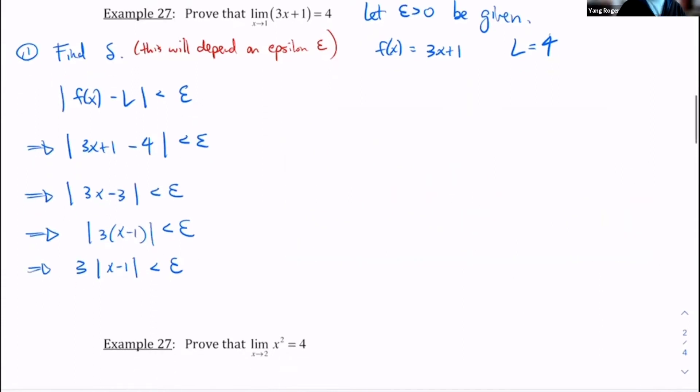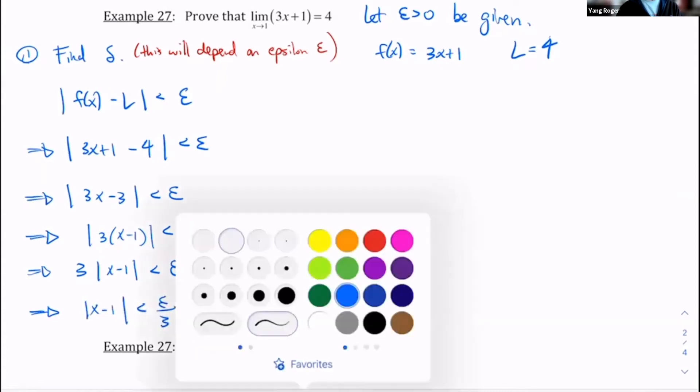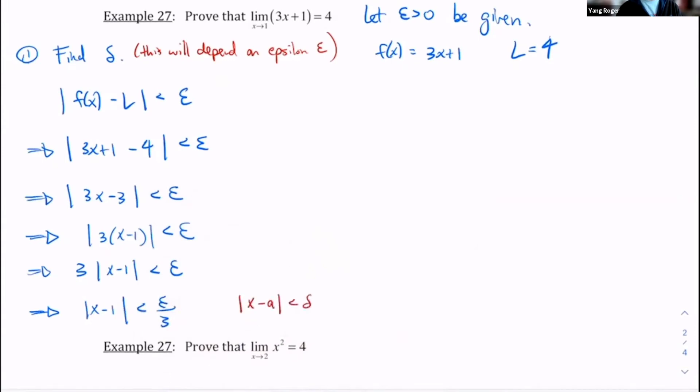So does anyone have any suggestions as to what the final step is going to be here for this first part, finding delta? Well, what I could do is I could divide both sides by 3, so I'll have x minus 1 is less than epsilon over 3. And this is really matching my x minus a is less than delta, right? Because my a was equal to 1. I forgot to write that up top there, my a is equal to 1. So it's almost like you have a 1 here, you have a 1 here, that's your a, and then this is your delta. So this is our a, this is our delta.